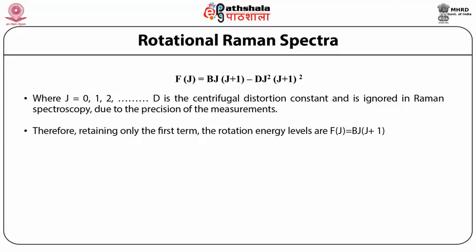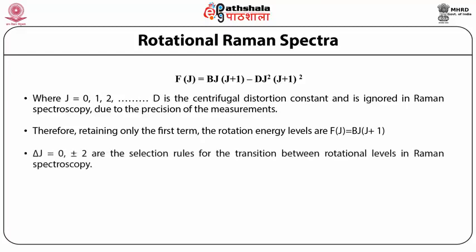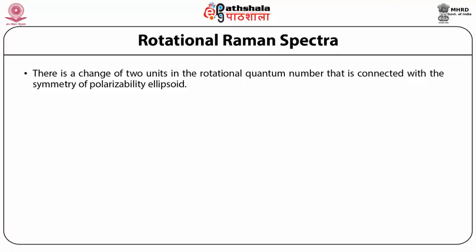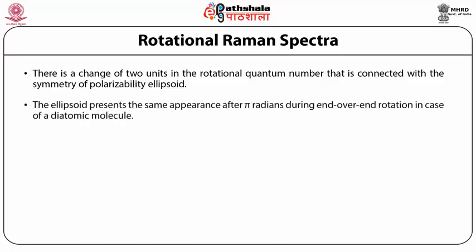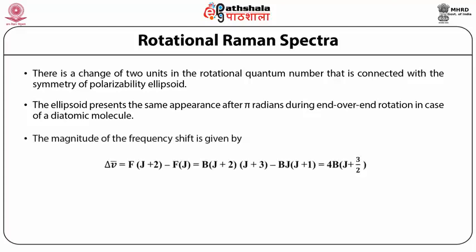Therefore, retaining only the first term, the rotational energy levels are F(J) = BJ(J+1). The selection rules for transitions between rotational levels in Raman spectroscopy are ΔJ = 0, ±2. There is a change of two units in the rotational quantum number, connected with the symmetry of the polarizability ellipsoid. The ellipsoid presents the same appearance after π radians during end-over-end rotation in the case of a diatomic molecule. The magnitude of the frequency shift is given by Δν = F(J+2) − F(J) = 4B(J + 3/2).